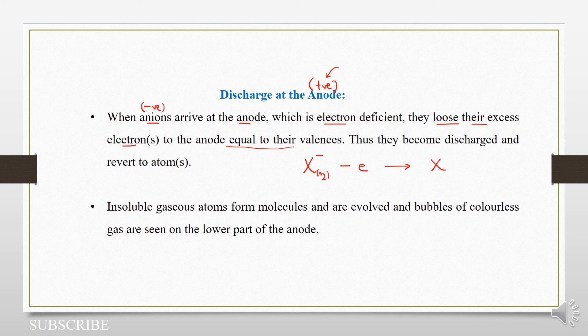I'll ignore the state symbol because it's a bit tricky, because most of these non-metals will actually be diatomic. So that's what we mean by losing its charge. So initially it has a negative charge, but at the end it has no charge. Usually here we have a change of state. So insoluble gaseous atoms form molecules and evolve as bubbles of a colorless gas seen at the anode.